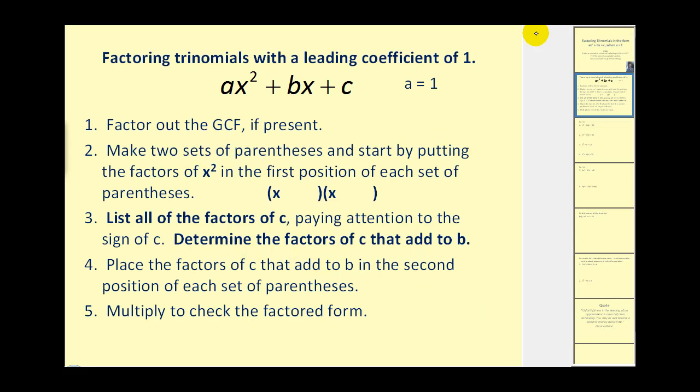Let's take a look at our steps to factor a quadratic in this form. Step one, as always, we want to factor out the GCF, if present. Step two, we'll make two sets of parentheses and start by putting the factors of x² in the first position of each set of parentheses. Since x times x equals x², our setup will look like this.